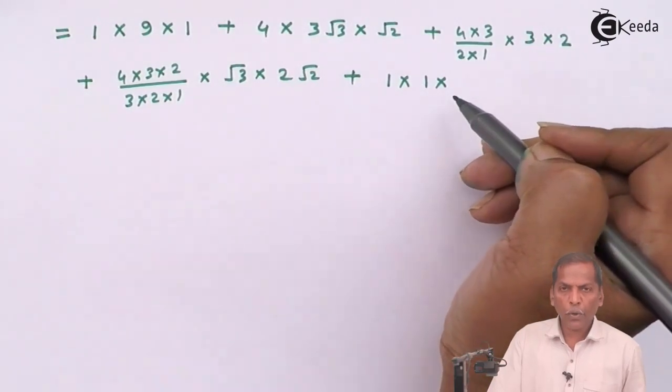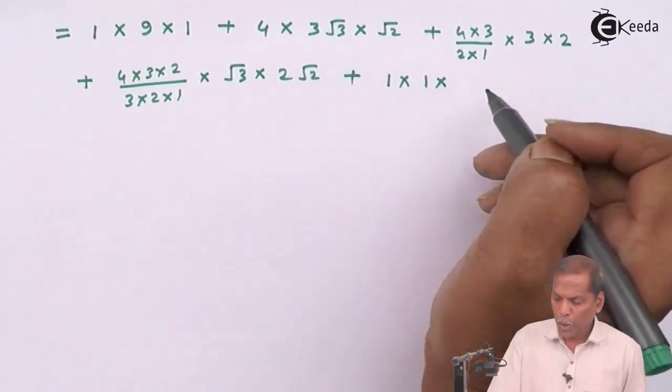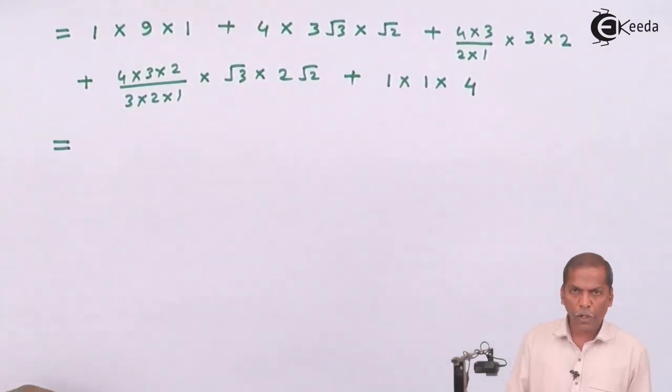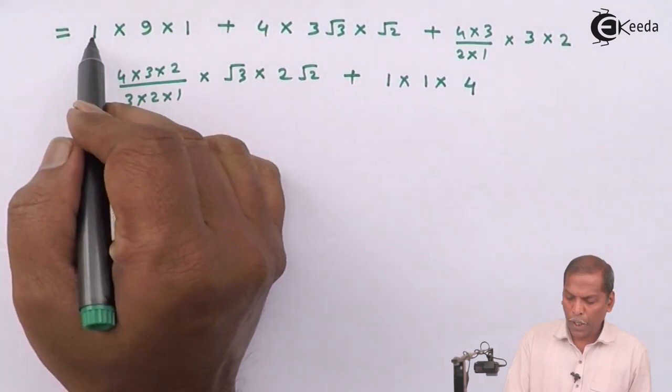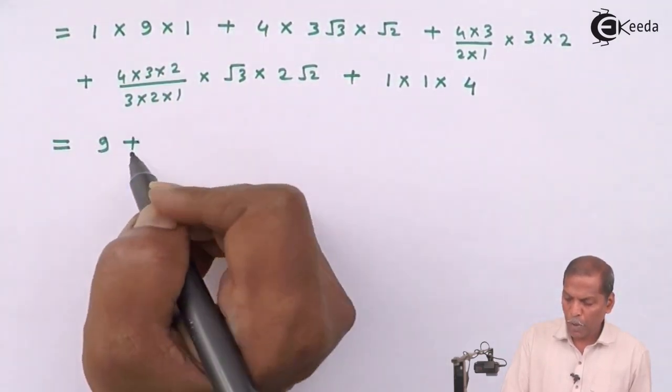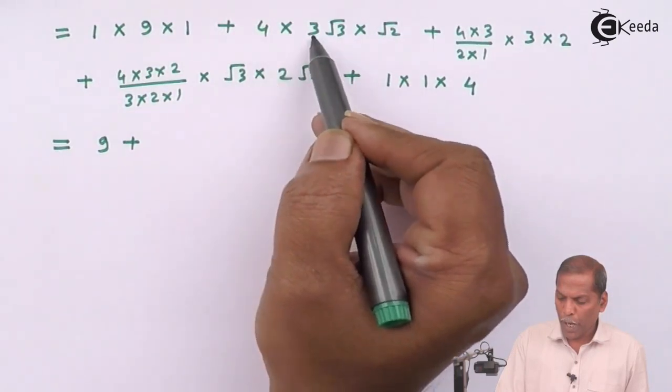Finally 4C4 means 1, root 3 raised 0 also 1, and root 2 raised 4 so that uses 4. So on simplifying further we get 1 into 9 into 1 so that is 9.